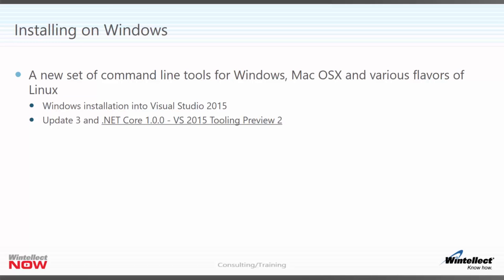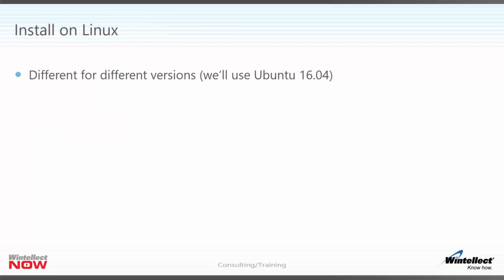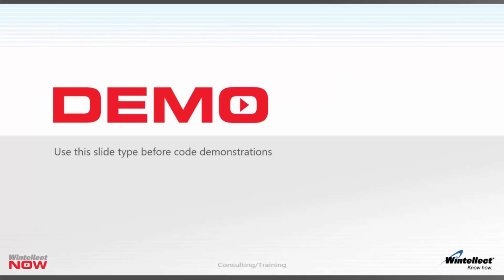This is obviously at the time of recording — going forward, we'll get released versions of these tools as part of Visual Studio. For Linux, the installation is slightly different for different versions. Currently only certain versions are supported. We'll look at Ubuntu 16.04. To do this, we need to set up the correct repository, run apt-get to get the packages, and that gives us access to the .NET Core tools.